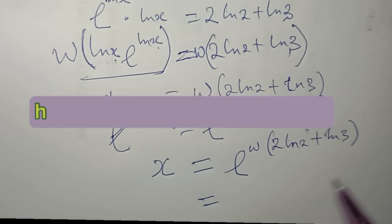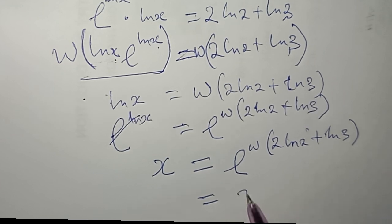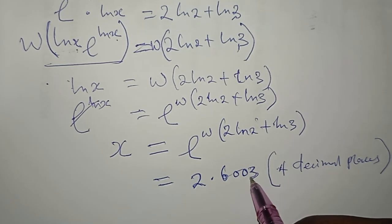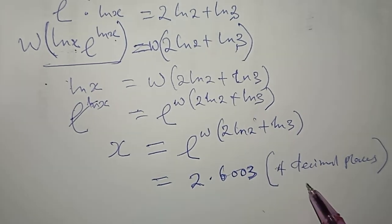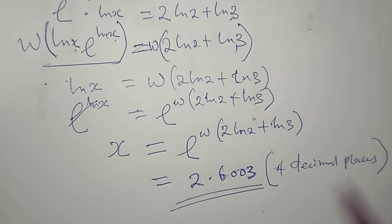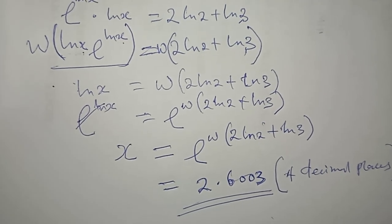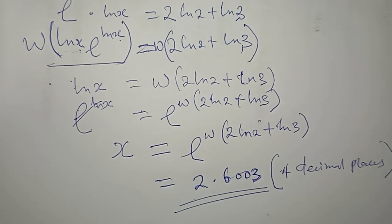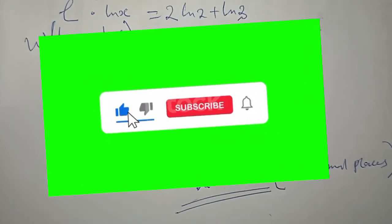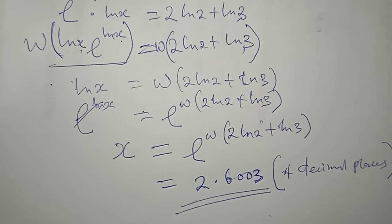When you compute this using Wolfram Alpha, the final answer is approximately 2.6003, to four decimal places. That is how you solve this kind of question. I hope you enjoyed the video — hit the like button, subscribe, turn on notifications, share with your friends, and I'll see you in the next video. Bye!